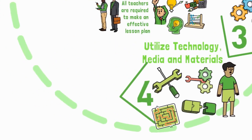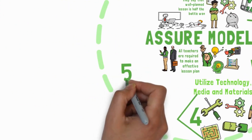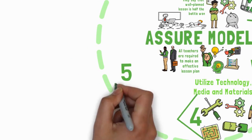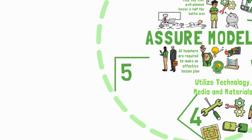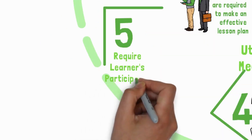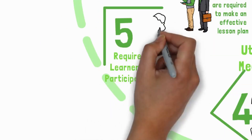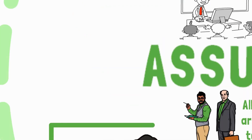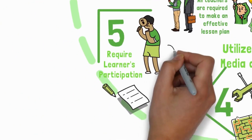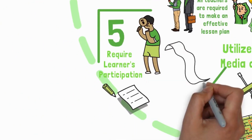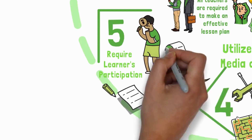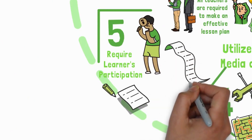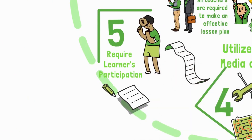The fifth step is about requiring learners' participation. Requiring students to participate actively in the lesson will not just engage them, but will also help them to retain what they are learning. Incorporating cooperative learning structures, questioning, having discussions, creating fun hands-on activities, games, and so on are some ways to accomplish this.